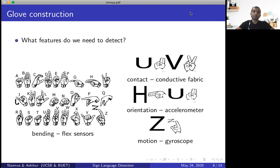However, detecting bending is not sufficient. We also need some other information. For example, if we take a look at the pair U and V, we can see that their bending is pretty similar. However, their contact point differs. So we need to detect contact. And to do that, we used conductive fabric. We also need to detect orientation. For example, if you take a look at the pair H and U, we can see that their contact points and bending are pretty similar. However, the only thing that is different is their orientation. And finally, we also have some dynamic symbols which involve motion. And to detect motion, we need gyroscope.